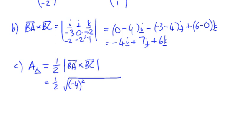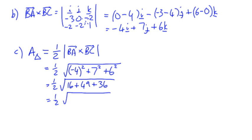So we've got the elements -4 squared plus 7 squared plus 6 squared, which is a half times the square root of 16 plus 49 plus 36. That's 16 and 49 is 65, and 65 plus 36 is 101.